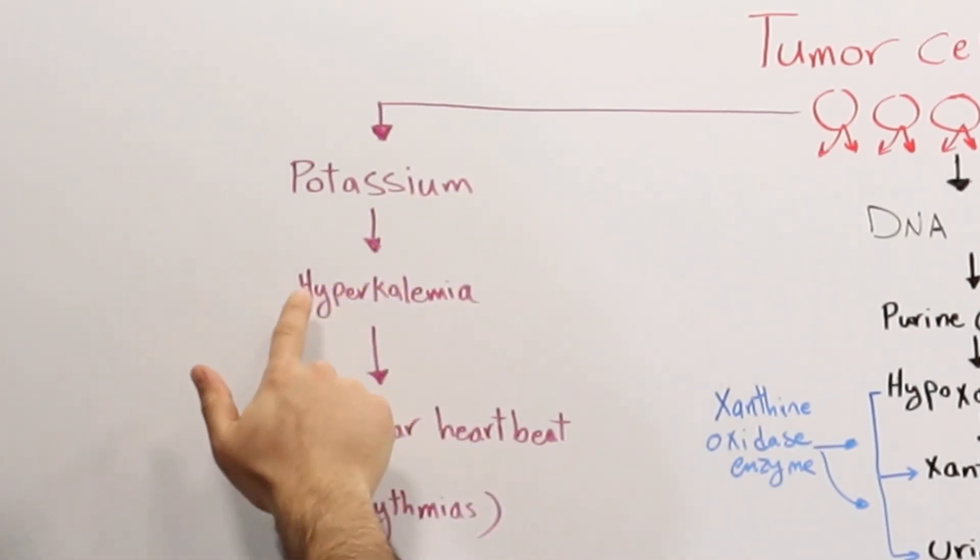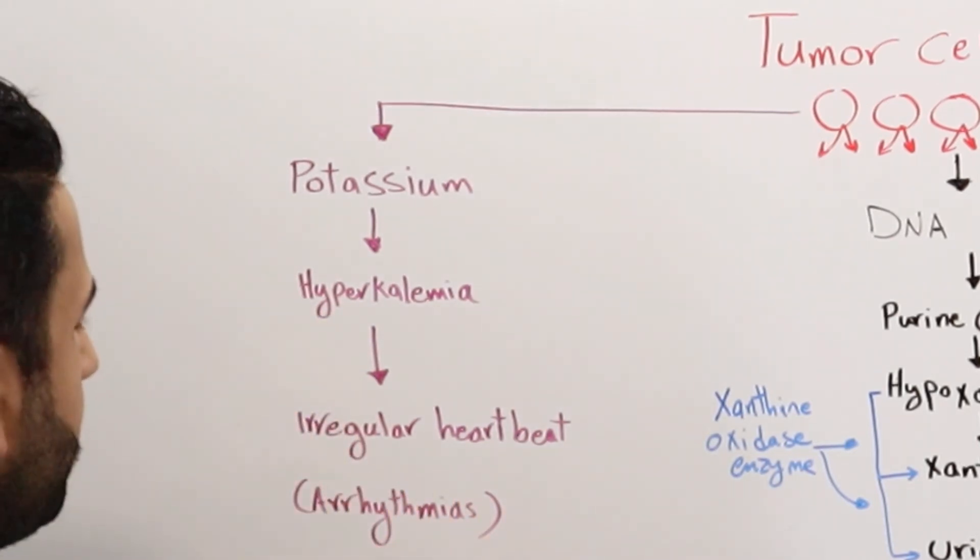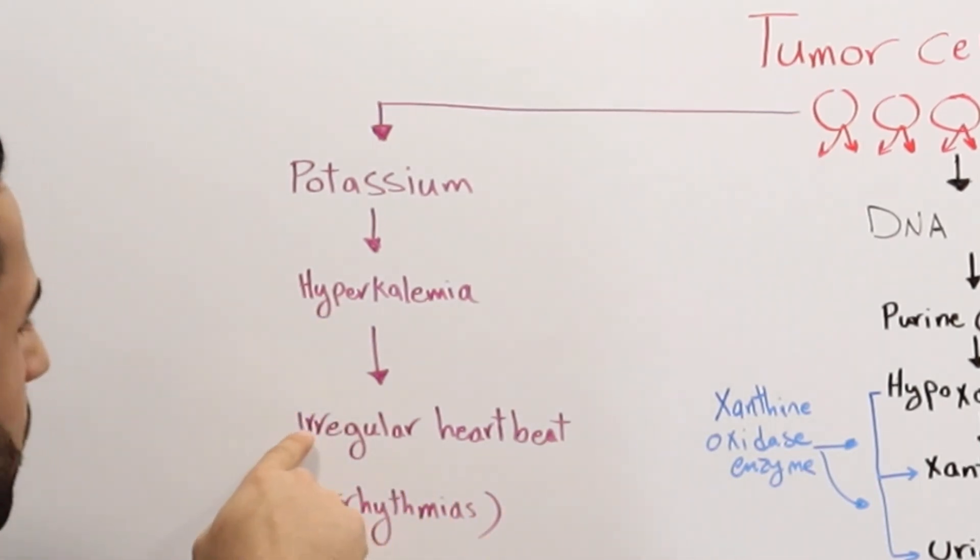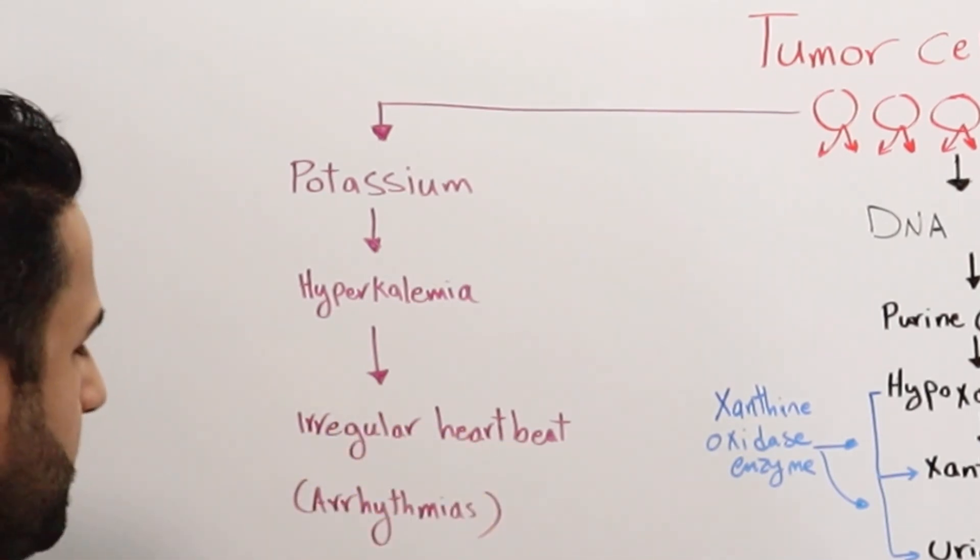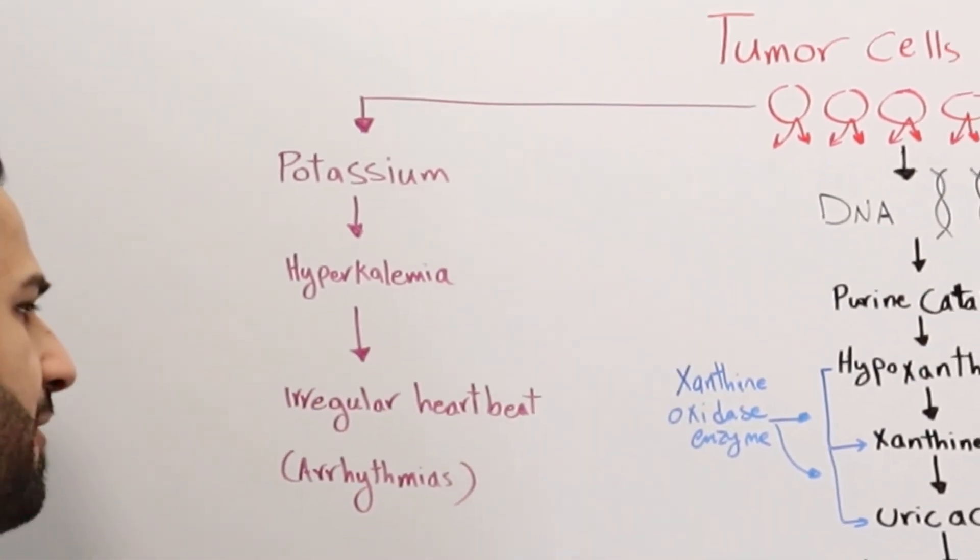Due to the high amount of potassium, this leads to a condition called hyperkalemia. What hyperkalemia does is basically leads to irregular heartbeat, which in other words is arrhythmia.